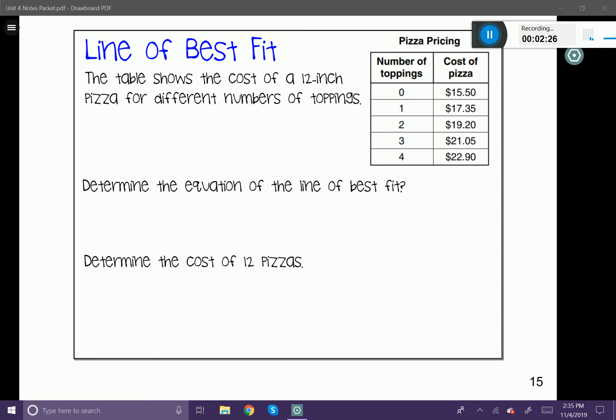Once you get to the bottom, you can see that the last two things in the data in L1 and L2 is 4 and $22.90. Those two numbers should line up together. If they don't, there's going to be an error message whenever we calculate the equation.